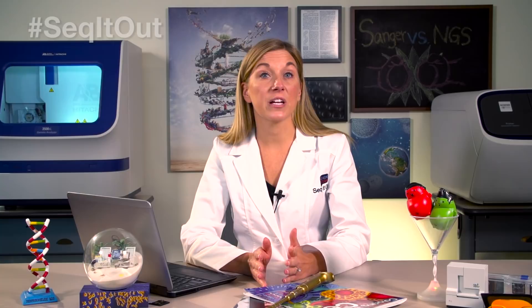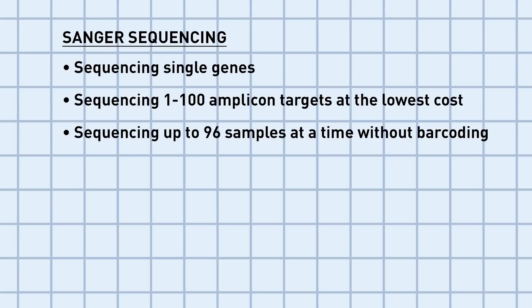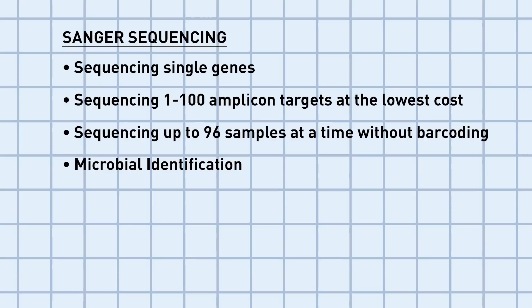With its ability for long reads and gold standard accuracy, Sanger sequencing is perfect for sequencing single genes, sequencing 1 to 100 amplicon targets at the lowest cost, sequencing up to 96 samples at a time without barcoding, microbial identification, fragment analysis, high throughput genotyping using, for example, snapshot, microsatellite or STR analysis, and NGS confirmation.